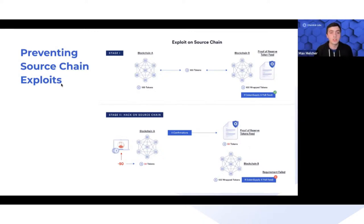When there is a source chain exploit, the attacker is able to somehow gain access to the tokens locked up on Blockchain A, usually by a bridge EOA. In this case, Blockchain B is not aware that those synthetic wrapped tokens are no longer backed proportionally.